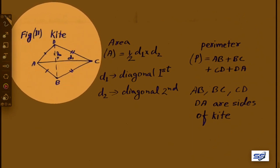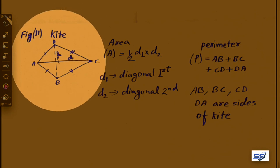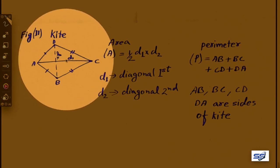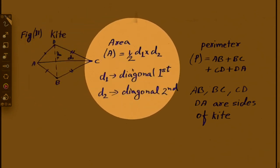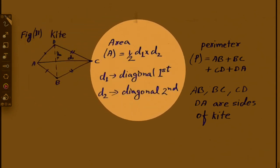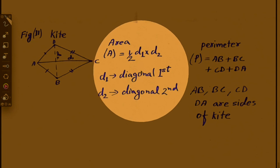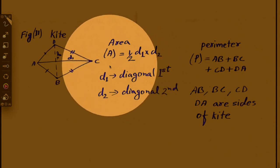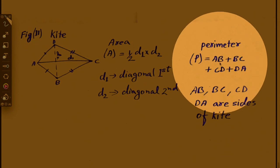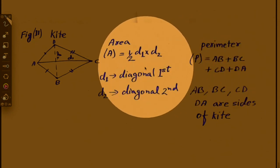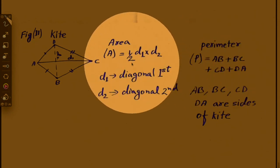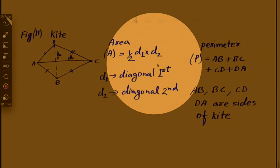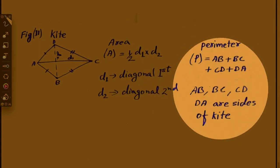We have been given a kite. To find the area of the kite, we use the formula A equals half into d1 into d2. To find the perimeter of the kite, we use P equals the sum of all sides. This formula gives the area and this formula gives the perimeter.